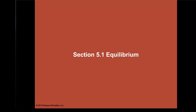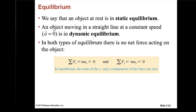First, let's learn what equilibrium is. We say an object at rest is in static equilibrium. When an object is moving in a straight line at a constant speed, we call it dynamic equilibrium. So we introduce two types of equilibrium: static equilibrium and dynamic equilibrium. In both types, there is no net force acting on the object.